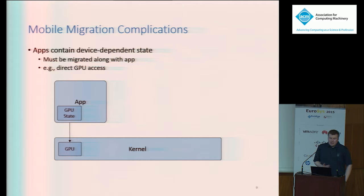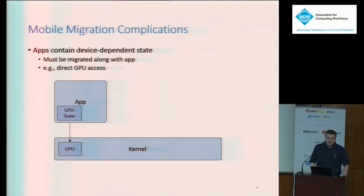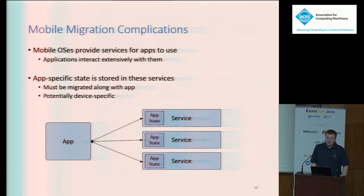In addition to all this device heterogeneity, the applications are interactive and user-facing, meaning they require direct access to the GPU for hardware acceleration. We somehow have to migrate this GPU state along with the app. But GPUs are massive black boxes with massive code bases, so migration is pretty much impossible. Mobile applications also interact extensively with system-provided services, like a notification service. An app that wants to post a notification asks the notification service to do it on its behalf. A significant amount of the application state actually resides within these services, so in order to migrate the app, we have to migrate this state along with it.